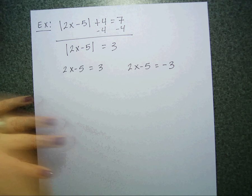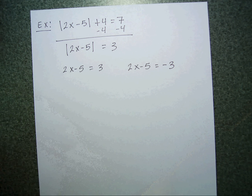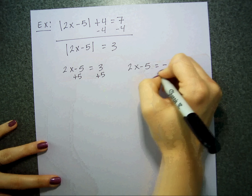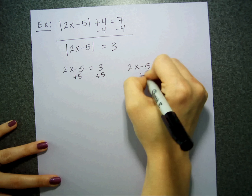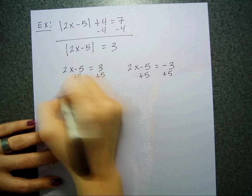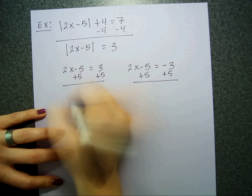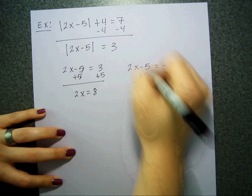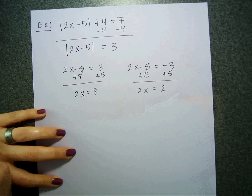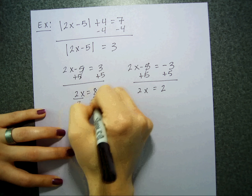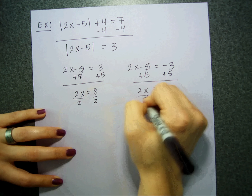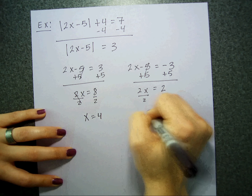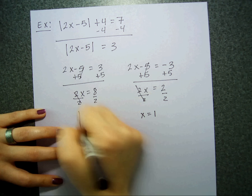Two fairly simple linear equations to solve. I'll add five to both sides on both equations — you can do them one at a time. I get 2x is equal to eight, and 2x is equal to two. Divide both sides by two, and I get x is equal to four, or x is equal to one.